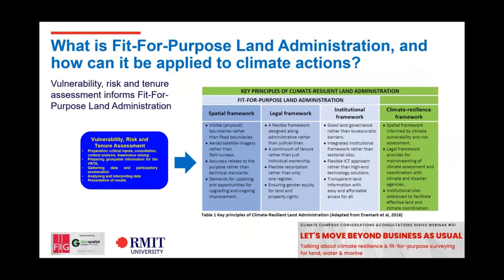Eugene had a slide earlier about fit-for-purpose land administration. What I think is needed to apply this wonderful framework to climate challenges is, first of all, a vulnerability, risk and tenure assessment to understand at the community level the dimensions and challenges that need addressing. Then, supporting the spatial, legal and institutional frameworks with spatial frameworks informed by climate vulnerability and risk assessment, legal frameworks providing for mainstreaming of climate assessment, coordination with climate disaster agencies at different levels, and addressing institutional silos so that we're not just dealing with land issues, but also considering disasters, climate, water and marine.